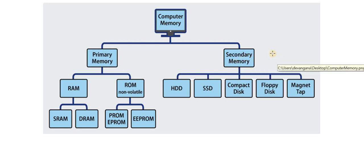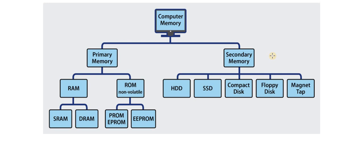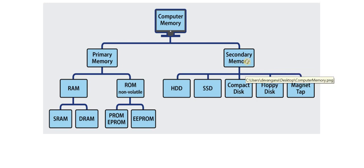Secondary memory is also known as external memory, and it is non-volatile — meaning it is permanent memory. Data stored in secondary memory is stored permanently. These are used for storing data and information permanently. CPU does not directly access this kind of memory; instead, they are accessed through input-output routines. The contents of secondary memory are first transferred to the main memory, and then the CPU can access it.